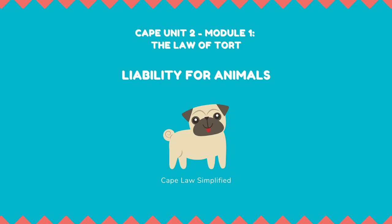Cape Law Unit 2, Module 1: Tort Law. Today we will be doing liability for animals. There are four different ways in which a defendant may be liable for damage done by his animal, and these four ways may be classified as: A) liability for cattle trespass, B) liability for dangerous animals, C) liability for dogs, and D) liability in negligence.